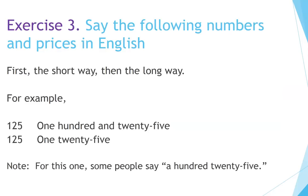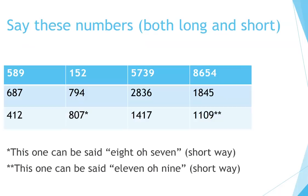Exercise three: say the following numbers and prices in English — first the short way, then the long way. For example, 125: short way is 'one twenty-five,' long way is 'one hundred and twenty-five.' Note: some people say 'a hundred twenty-five.' Say these numbers both long and short.